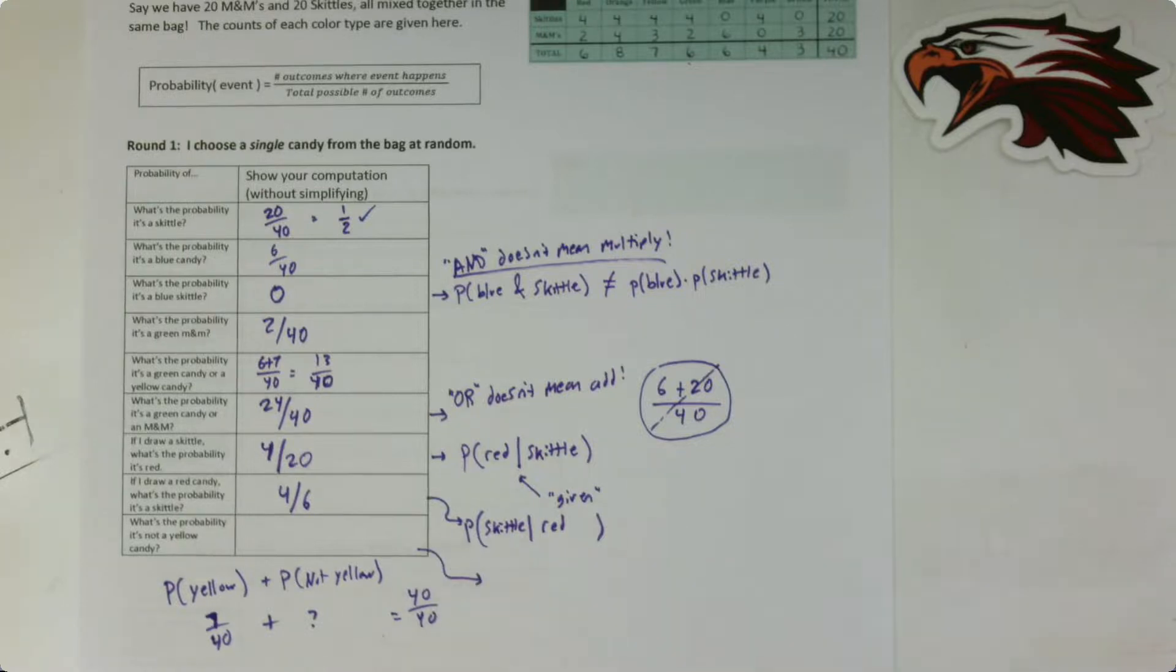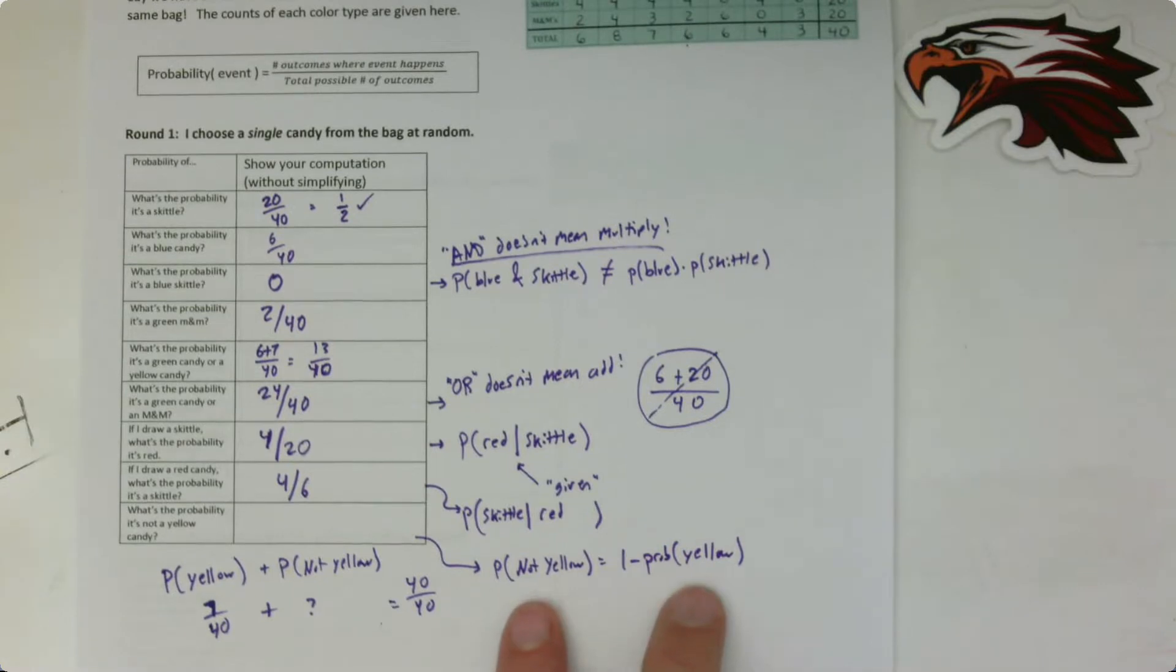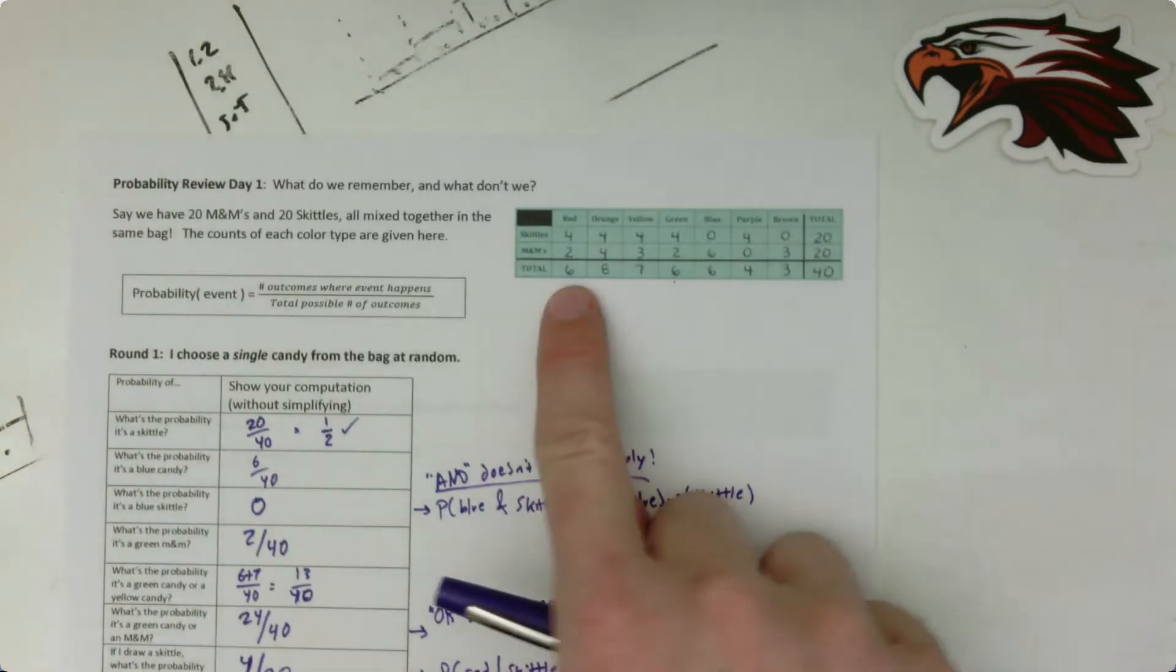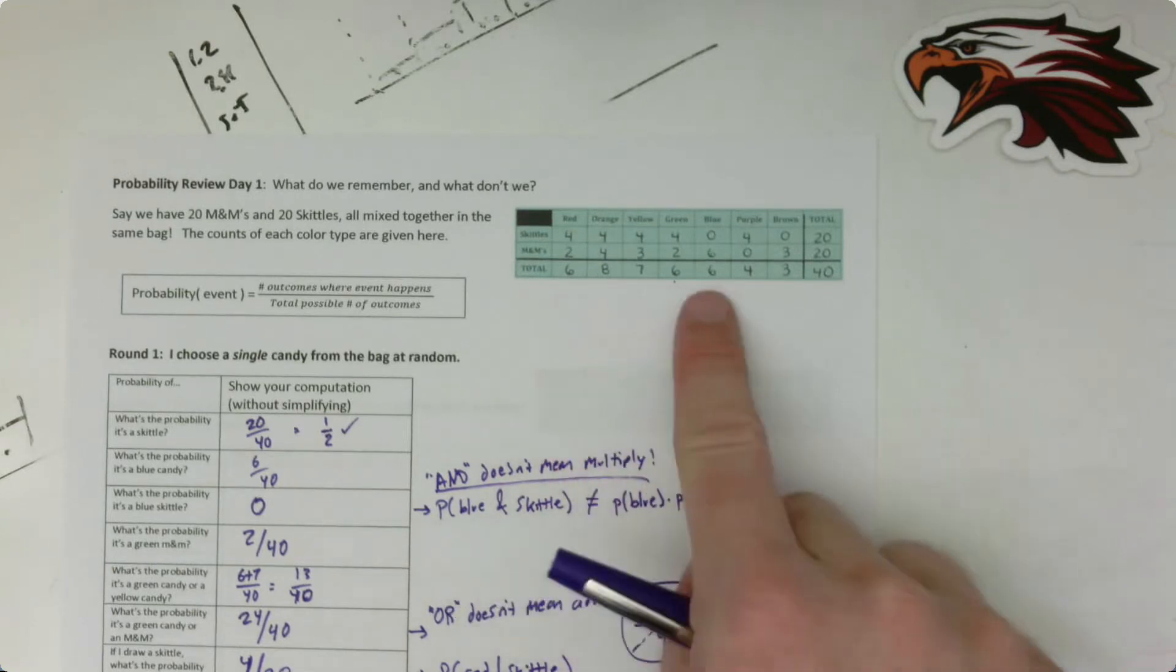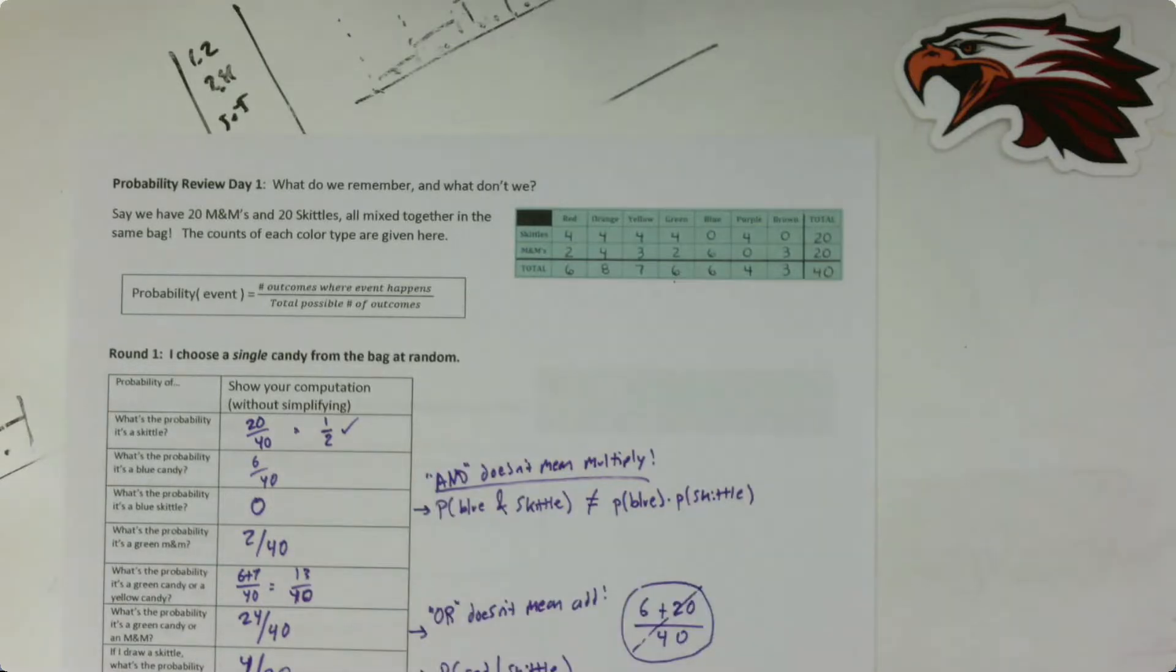So you've probably seen this idea before. The idea is that the probability of being not yellow is just 1 minus the probability of being yellow. And the idea is that these two events are called complementary whenever that happens. Complementary events are events whose probability sums to be 1. And there's a special notation. Instead of writing not yellow, you could write yellow and then with a little exponent or superscript C, meaning complement. So the probability of the complement of being yellow is 1 minus the probability of being yellow. So let's write that 1 minus 7 over 40. And of course, you could solve this the same way we've been solving all of them. So we could just add up how many things are not yellow. So we could add 6 and 8 and 6 and 6 and 4 and 3 and divide by 40. And that ends up being the same thing.